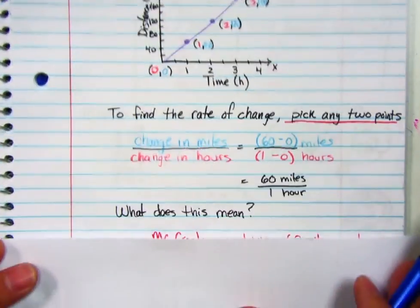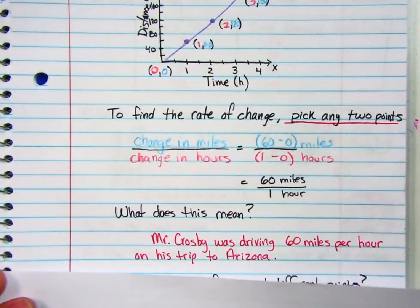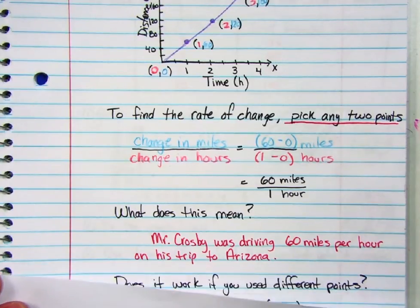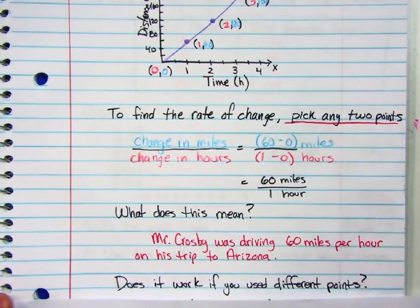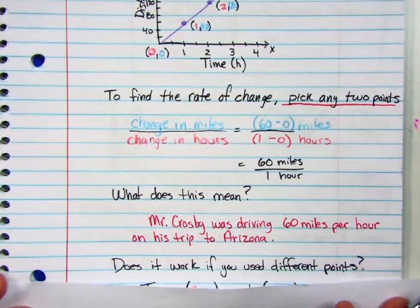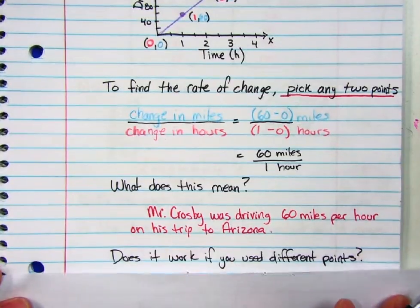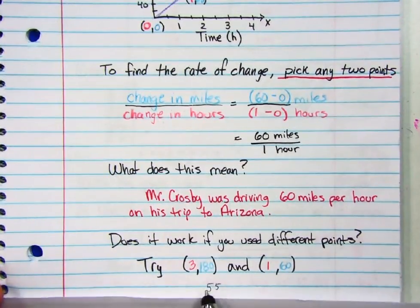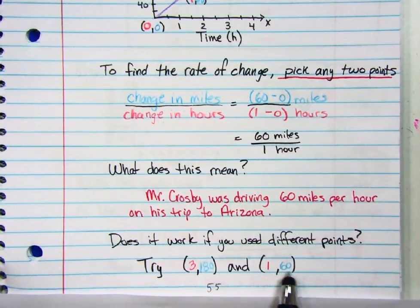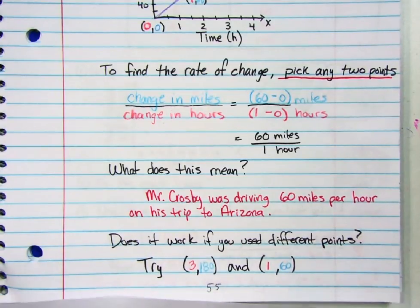What does it mean? It means that Mr. Crosby was driving 60 miles per hour on his road trip to Arizona. Now I wonder, does it work if you use different points? Try using these two points — find the difference between these and divide it by the difference of those, and see what you get.